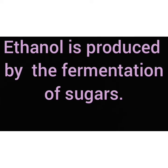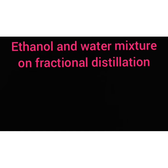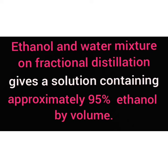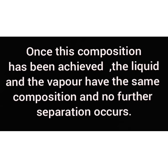Ethanol is produced by the fermentation of sugars. An ethanol and water mixture on fractional distillation gives a solution containing approximately 95% ethanol by volume. Once this composition has been achieved, the liquid and vapor have the same composition and no further separation occurs. This mixture can be treated as an azeotrope — specifically, a Minimum Boiling Azeotrope.